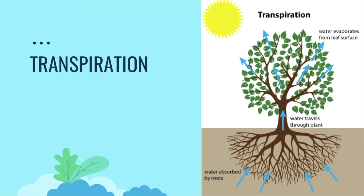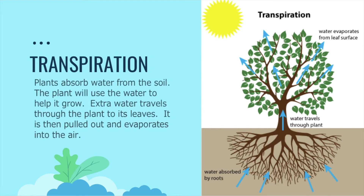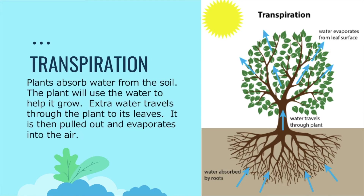Transpiration. You might not have heard of this one, but it is definitely a part of the water cycle. Plants absorb water from the soil. The plant will use the water to help it grow. Extra water travels through the plant to its leaves, where it is then pulled out and evaporates into the air.